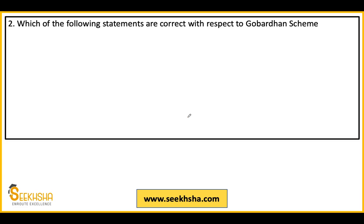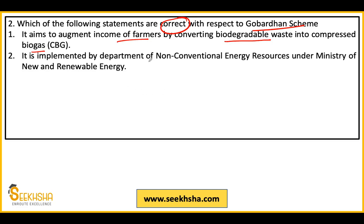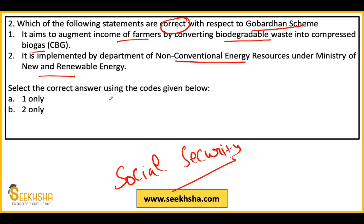The Gobardhan scheme-related question asks which statement is correct. Statement one says it aims to augment the income of farmers by converting biodegradable waste into compressed biogas. Statement two says it is implemented by the Department of Non-Conventional Energy Resources under the Ministry of New and Renewable Energy. This is a kind of social security question because this particular scheme is for farmers and their income security. Options are: one only, two only, both, or neither. The answer is: only the first statement is correct. The second statement is wrong.